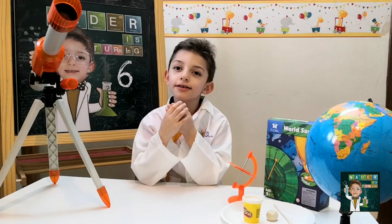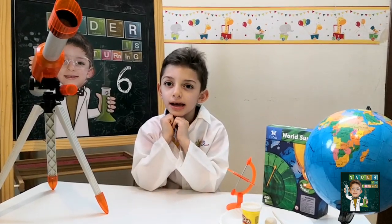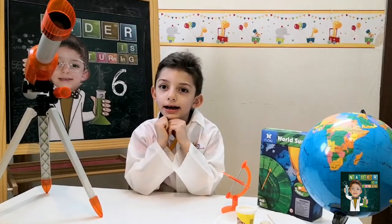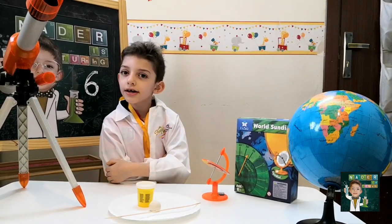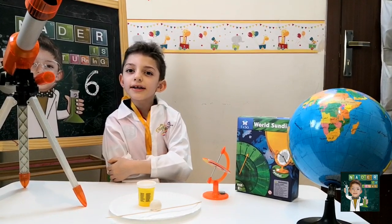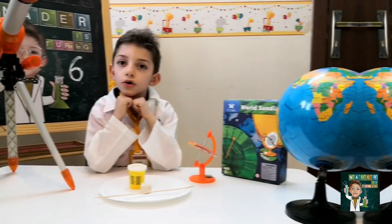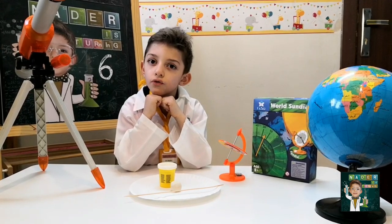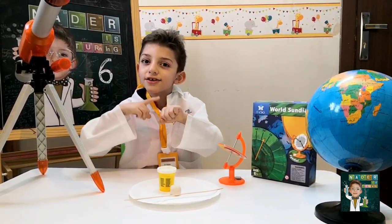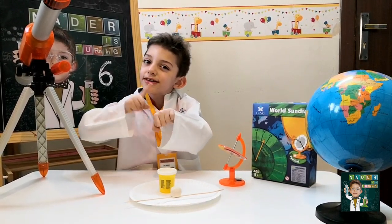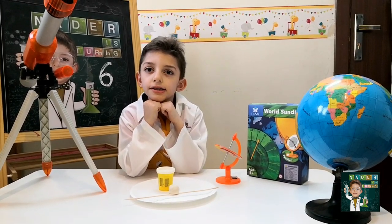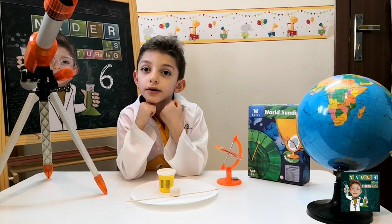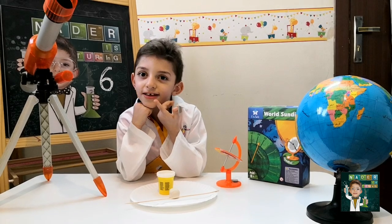Most sundials use a flat plate and a stick. Wherever the sun is shining, the gnomon casts a shadow. You look to where the shadow falls to tell us what time it is. As long as there is sunlight outside, you can use it.